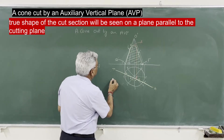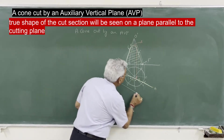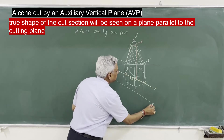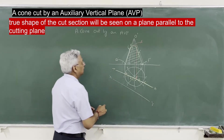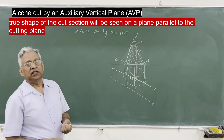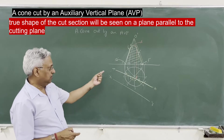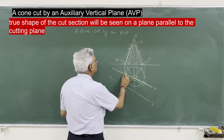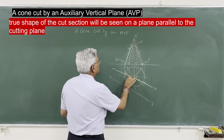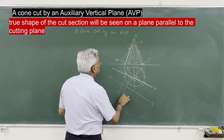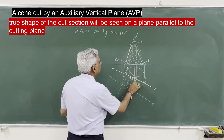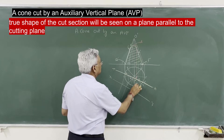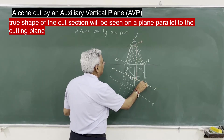Let us draw the true shape. Take a plane X1-Y1 parallel to the auxiliary vertical plane or H-T line, and project all these 6 points — A, B, C, D, E, and F — onto this plane.